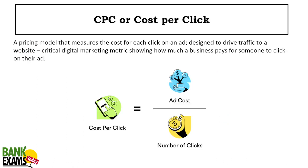CPC, or Cost Per Click: on Google, if you want to place ads you need to pay per click. You can decide the rate yourself by placing a bid, or let Google decide using their formulas. CPC equals ad cost divided by number of clicks. For example, if you spend 10,000 rupees and get 100 clicks, your CPC is 100 rupees — meaning you are paying 100 rupees for every click.